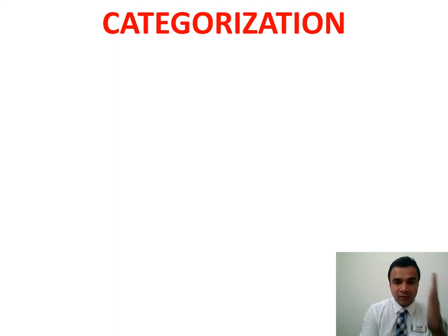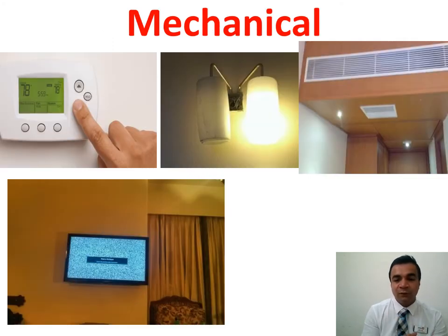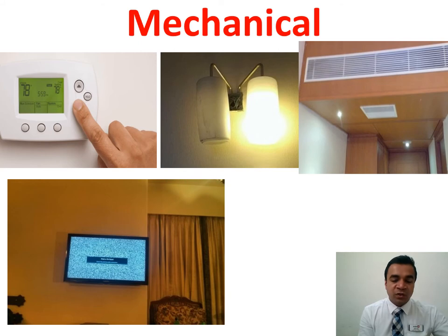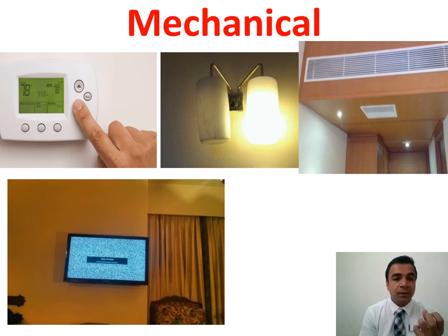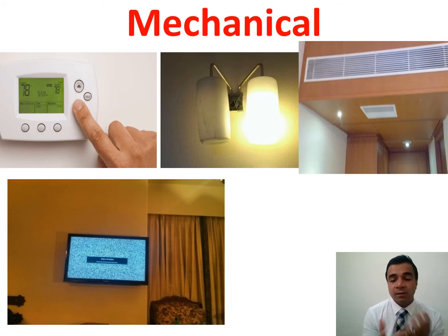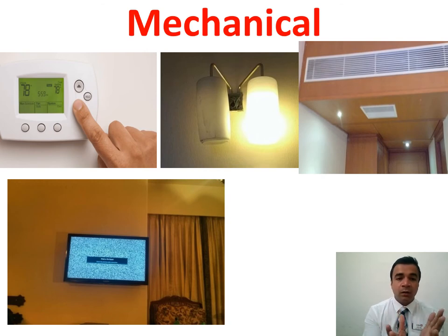Now all these complaints have been categorized into various parts. The first set is a mechanical complaint. As the first picture shows — the thermostat in a hotel room where one can control temperature — there could be a possibility the thermostat doesn't work or doesn't reach the expected temperature. The second picture shows lights not working or malfunctioning. Third, the air conditioning does not provide adequate cooling. Fourth, the LED doesn't work. When any of these things get faulty, we term them as mechanical complaints.